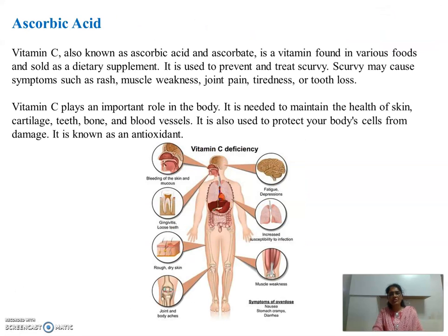Vitamin C is also known as ascorbic acid, which is found in various foods and sold as a dietary supplement. It is used to prevent and treat scurvy. Scurvy may cause symptoms such as rash, muscle weakness, joint pain, and tiredness. So, vitamin C plays an important role in the body.